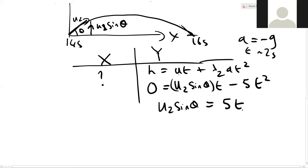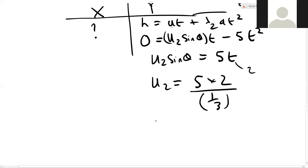And then we can put in the value of t. Remember that's 2. So we'll get u2 equals 5 multiplied by 2 divided by a third. That's our sine theta. So that means that the speed that it leaves the ramp at is about 30 meters per second.